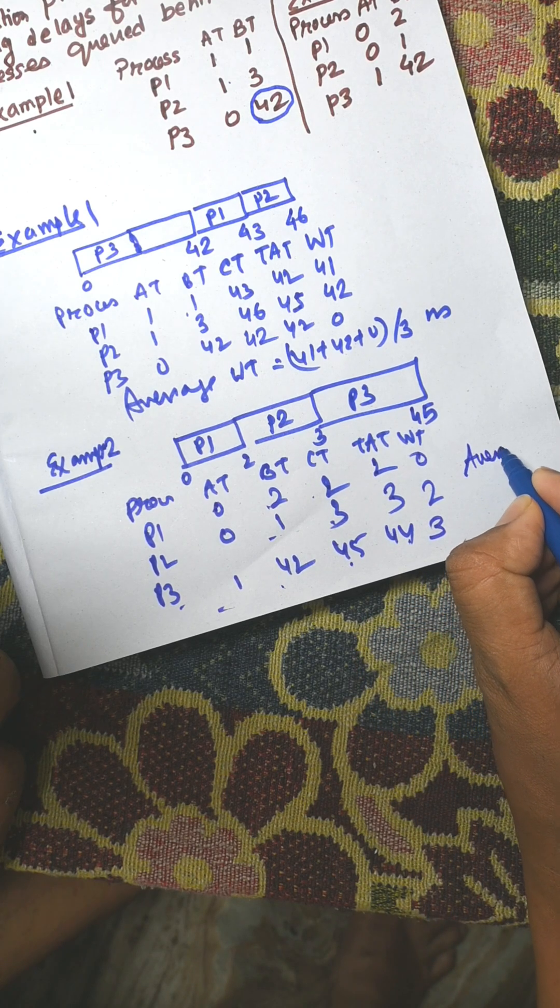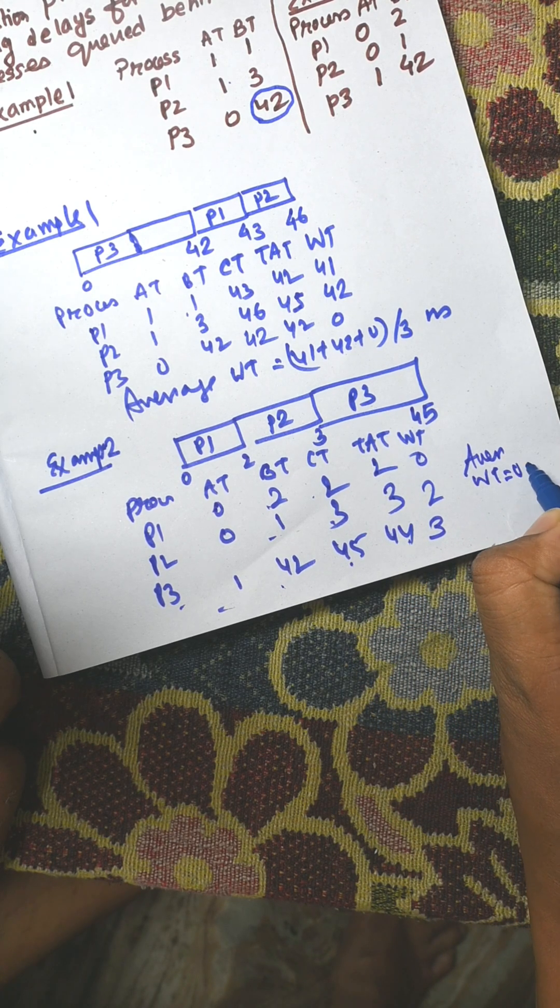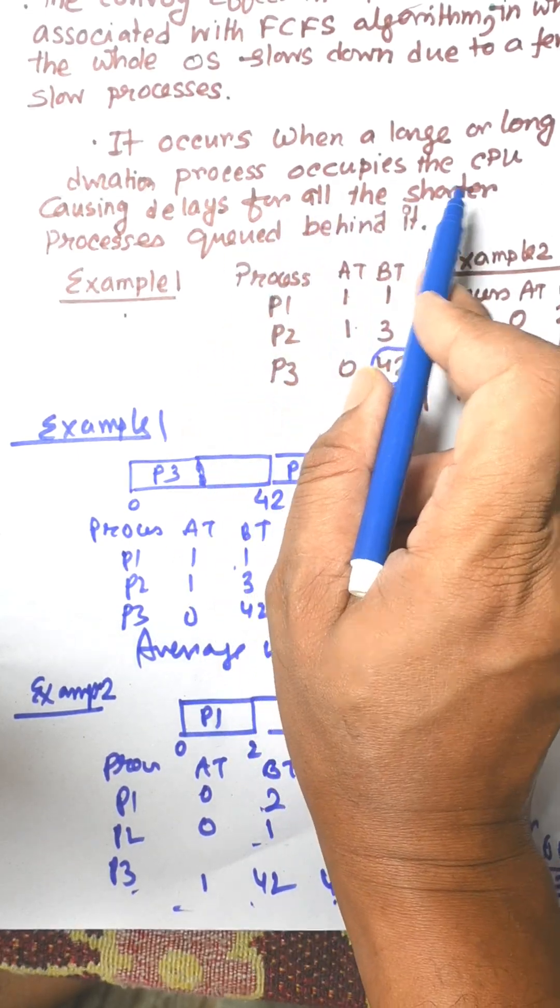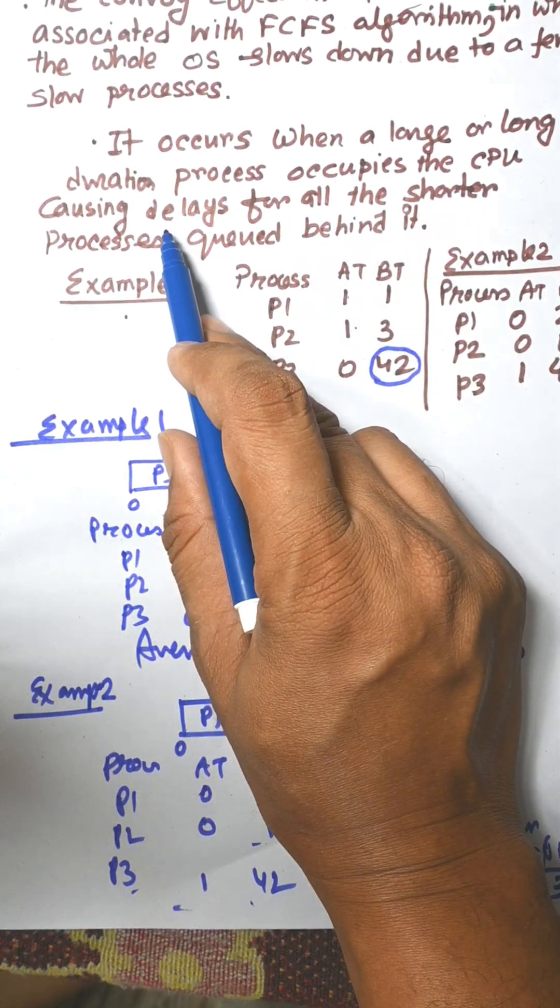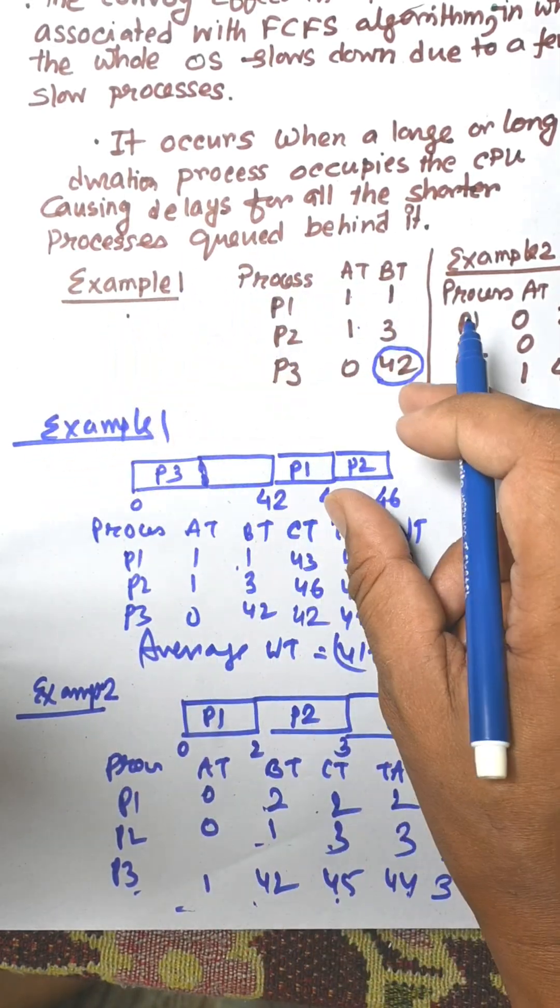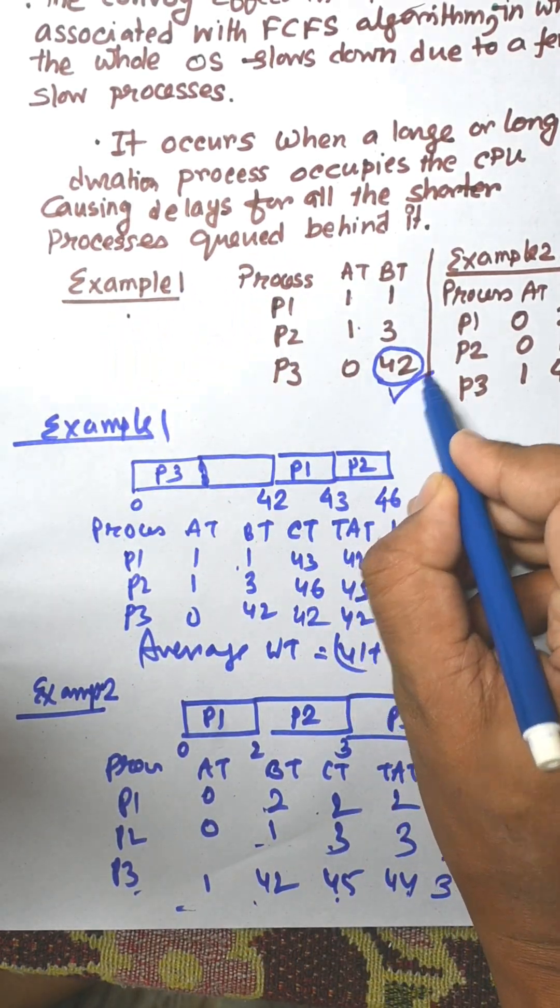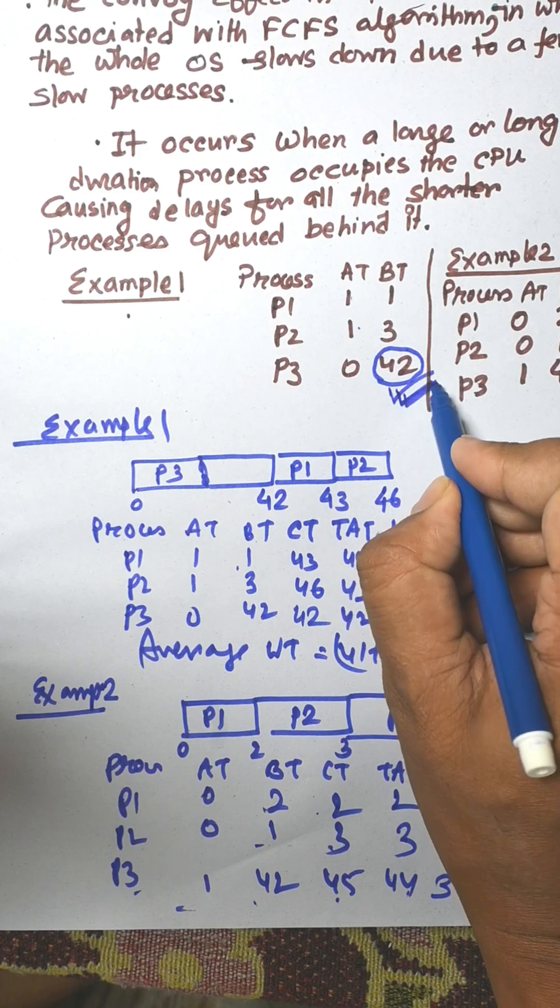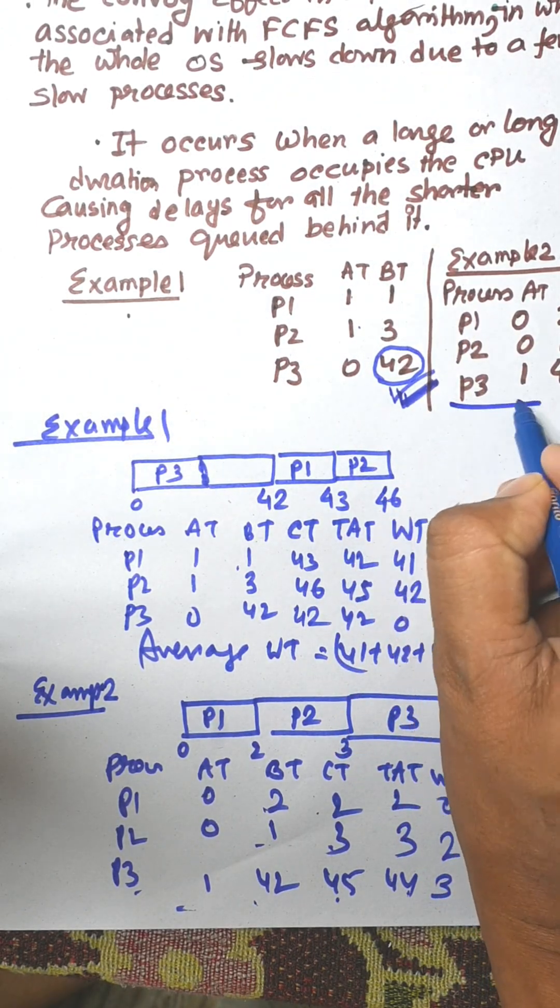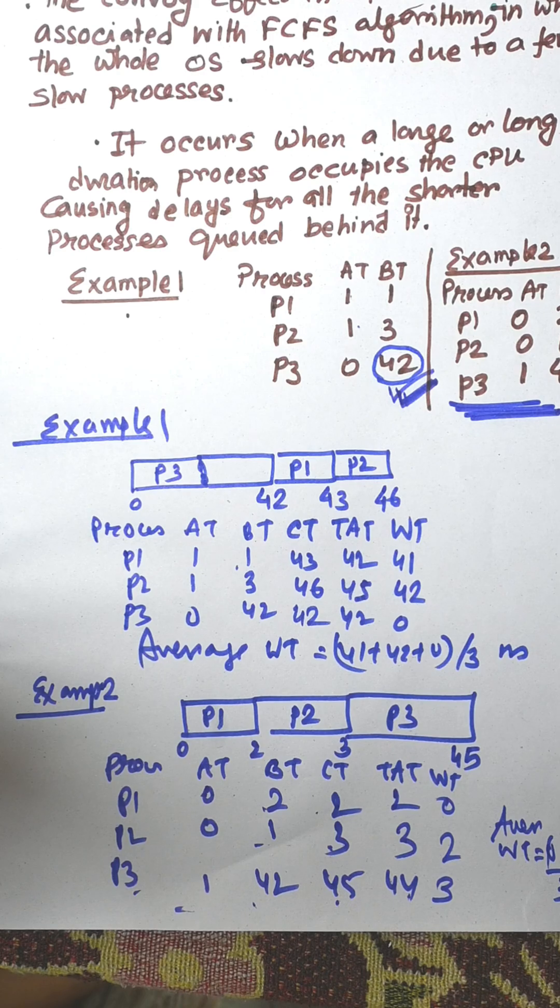Long duration processes occupying the CPU cause delay for other processes. That is why it is known as the Convoy effect. In these cases, P3 causes the Convoy effect in example one, but there is no Convoy effect in example two. Thank you very much for watching this video. Please share and subscribe.